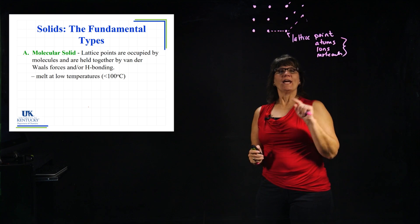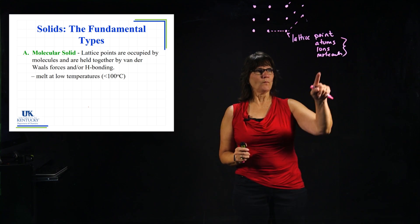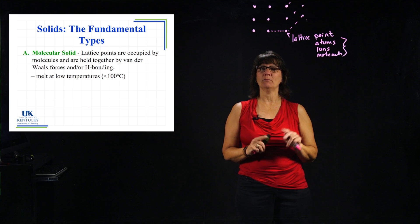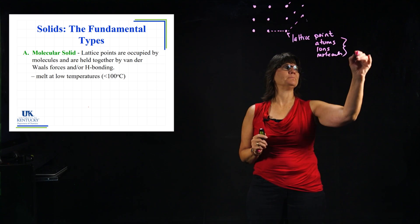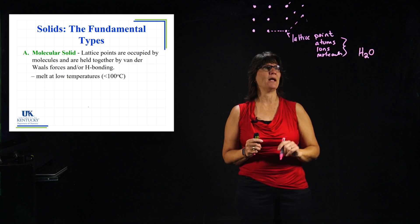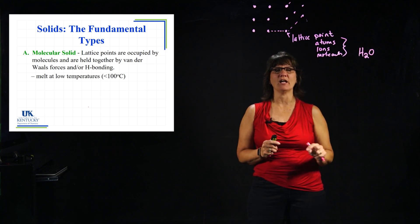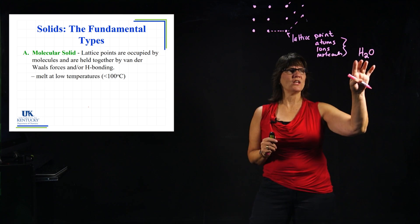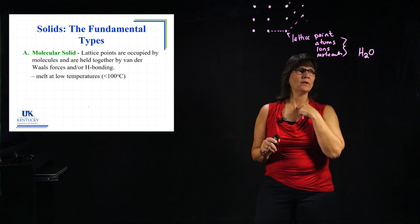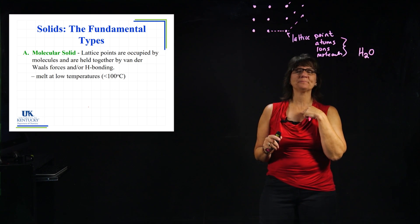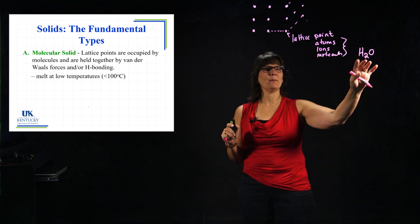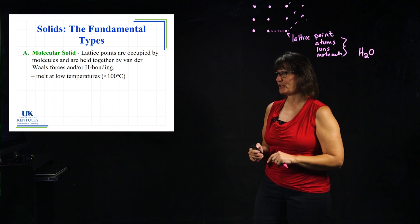If we look at a formula, we might be able to know just by looking at it that it's a molecular solid — it's made up of a molecule, not atoms or ions. But we're going to see that there's another type of solid that is not a molecular solid yet is still made up of a compound, so we'll see the difference in a little bit.